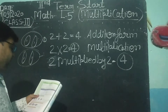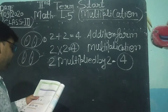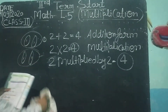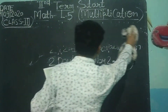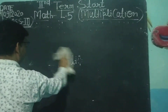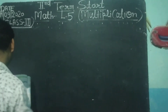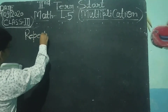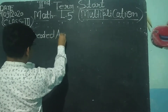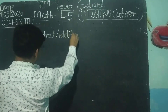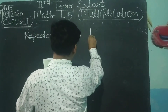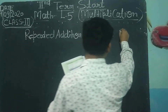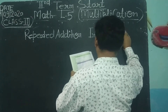Question 2: repeated addition inverse multiplication। इसमें 3 boxes दिये हुए हैं। पहले box में repeated addition है, दूसरे box में inverse — इसमें words में लिखना है — और तीसरे box में multiplication form है।